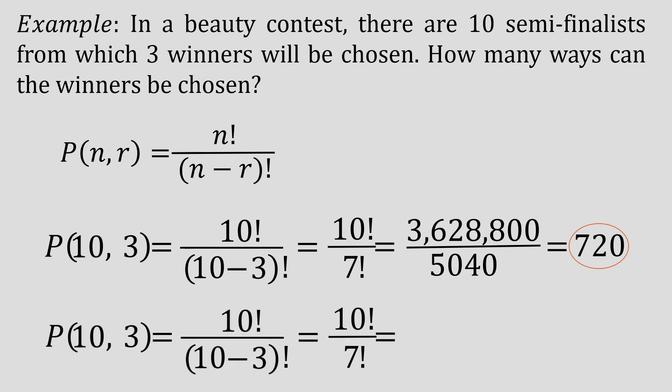Let us use the cancellation technique here in simplifying the factorial values. So we have here the denominator of 7 factorial. Hence, we are going to factor 10 factorial up to 7 factorial only. So you have 10 times 9 times 8 times 7 factorial over 7 factorial.